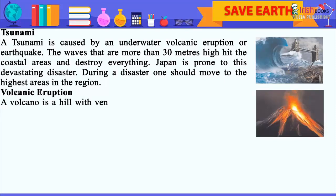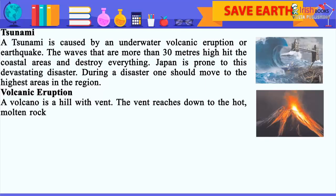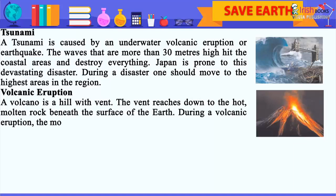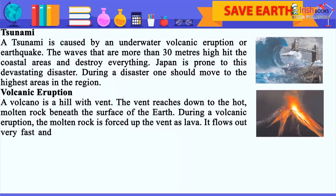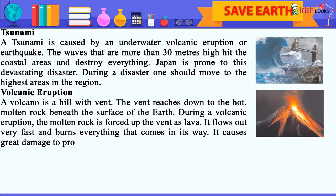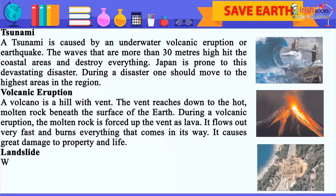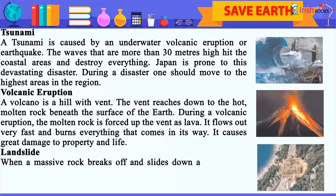Volcanic eruption: A volcano is a hill with a vent that reaches down to the hot molten rock beneath the surface of the earth. During a volcanic eruption, the molten rock is forced up the vent as lava. It flows out very fast and burns everything in its way, causing great damage to property and life.